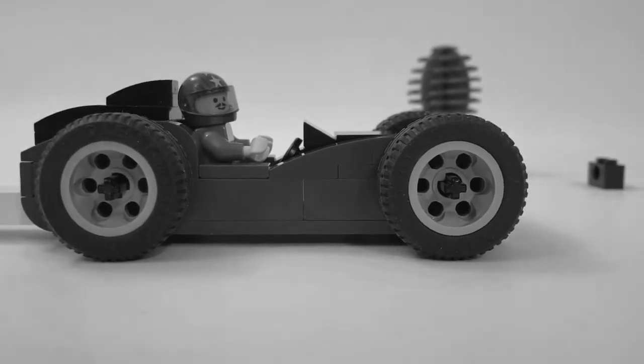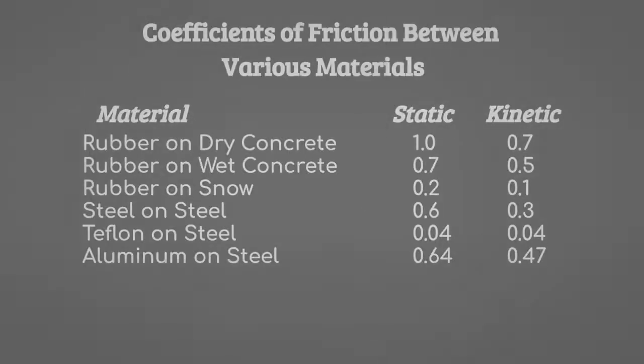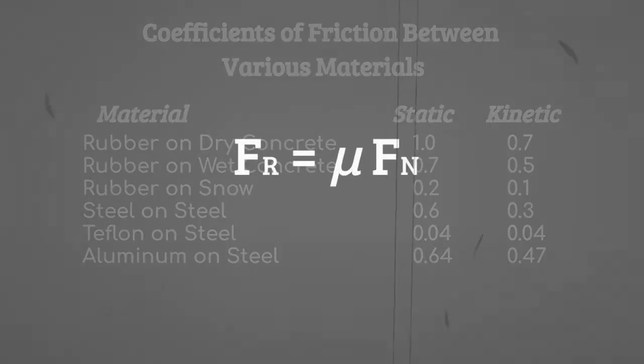Regardless of the type of friction that comes into play in a problem or situation, the equation for friction still applies. That coefficient of friction can either be specific to static or kinetic friction. It is important to note, static friction is always greater than kinetic friction. So be careful not to spin those car tires. There's less friction if you do.